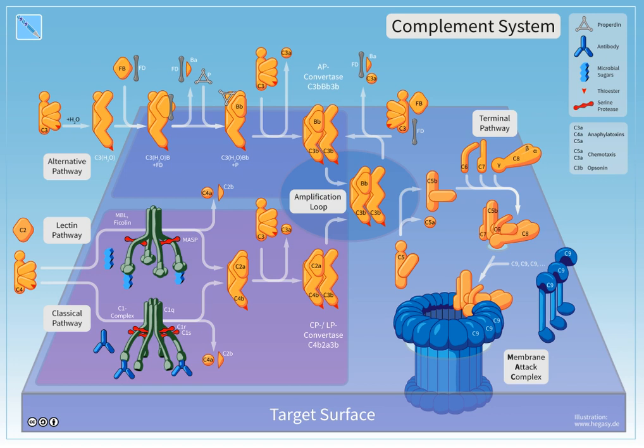C3B that is generated from C3 by a C3 convertase enzyme complex in the fluid phase is rapidly inactivated by factor H and factor I, as is the C3B-like C3 that is the product of spontaneous cleavage of the internal thioester. In contrast, when the internal thioester of C3 reacts with a hydroxyl or amino group of a molecule on the surface of a cell or pathogen, the C3B that is now covalently bound to the surface is protected from factor H-mediated inactivation.